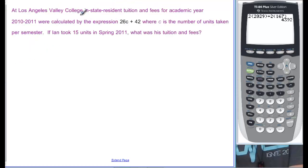At Los Angeles Valley College, in-state resident tuition and fees for academic year 2010-2011 were calculated by this expression, 26C plus 42, where C is the number of units taken per semester. If Ian took 15 units in spring 2011, what was his tuition and fees? So we have 26, and this 15 we have to decide what it means. C is the number of units taken, and they just told us that Ian took 15 units. So, C is going to be equal to 15.